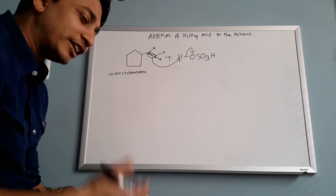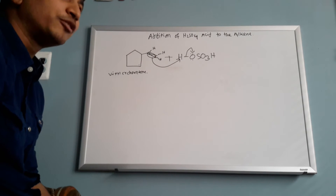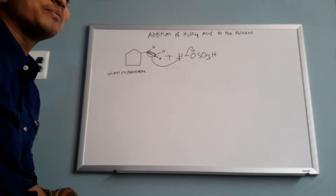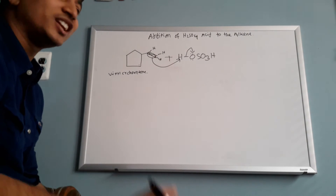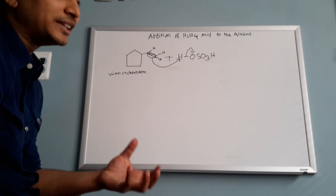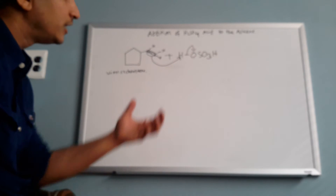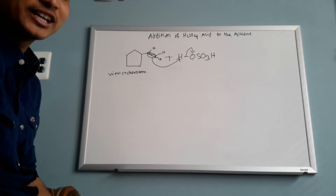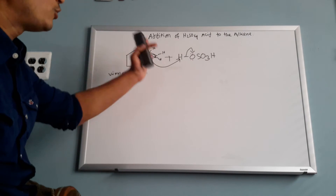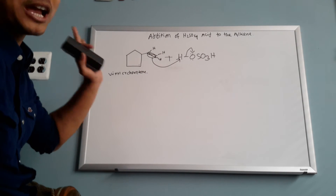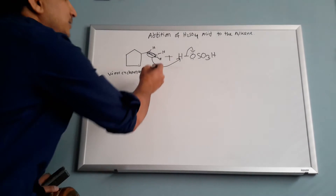Always remember: if you accept something from someone, you become negative. When somebody accepts electrons, they become negatively charged. So oxygen accepts the electron pair and oxygen becomes negatively charged. The pi bond always attacks first in the alkyl mechanism — this is motion number one and this is motion number two.